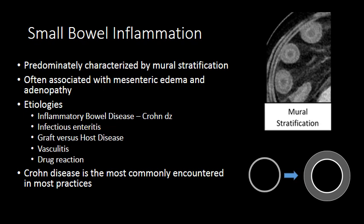Small bowel inflammation is typically characterized by a pattern of mural stratification. The mural stratification that results in wall thickening of the bowel often has some associated stranding or edema within the mesentery, and may also see adenopathy within the distribution of the inflammation. Etiologies include inflammatory bowel disease like Crohn's disease, infection, graft-versus-host disease, vasculitis, and drug reactions — these are the most common and should be the foundation of your differential when you see mural stratification and mesenteric edema.